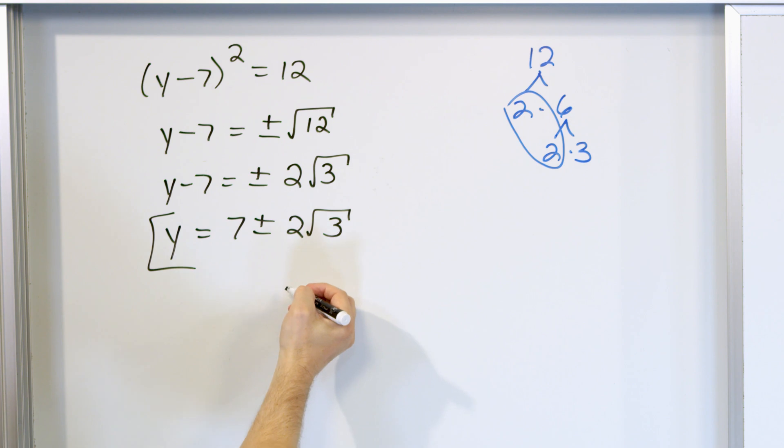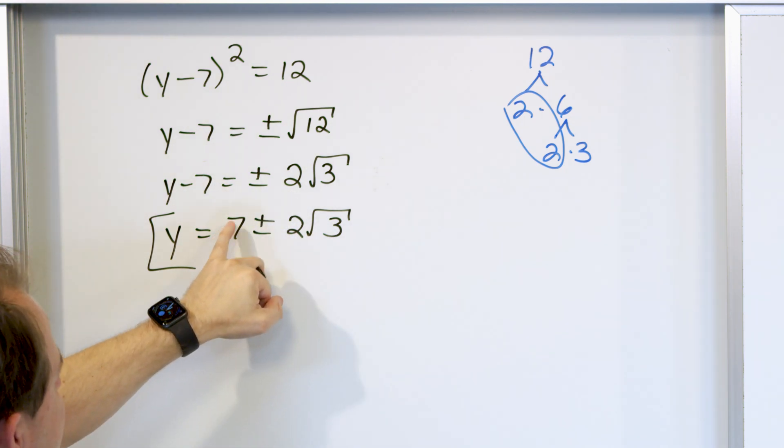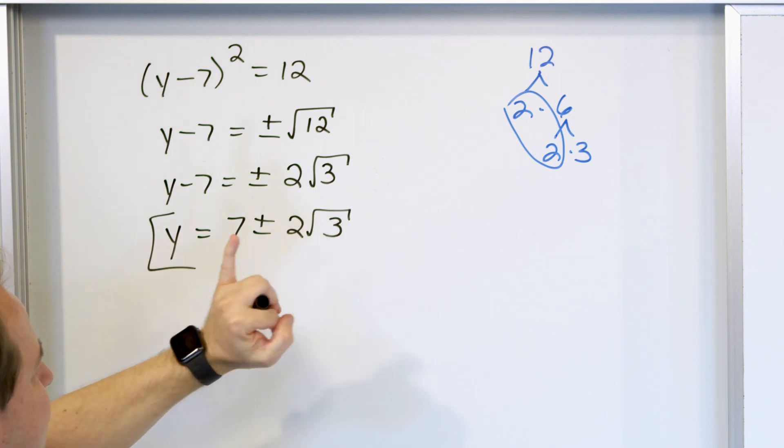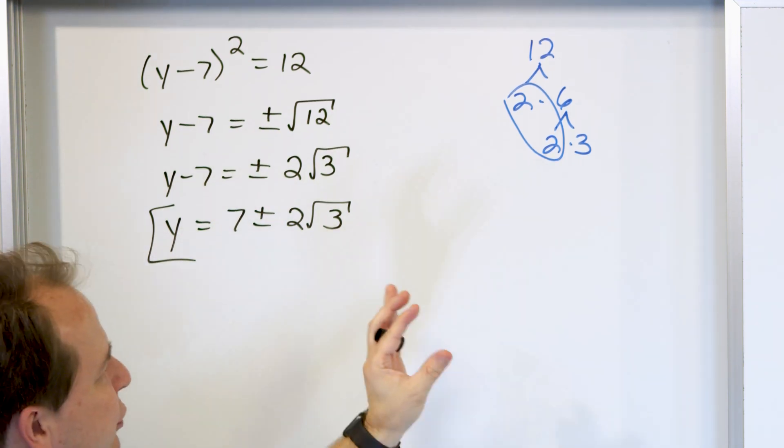And this is where you would leave it, right? Because what you have is two answers, plus or minus, meaning 7 plus the 2 times the square root of 3, and then also separately 7 minus 2 times the square root of 3. Those are two separate numbers.